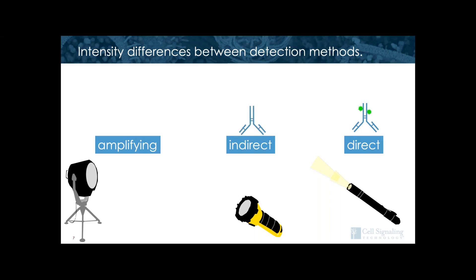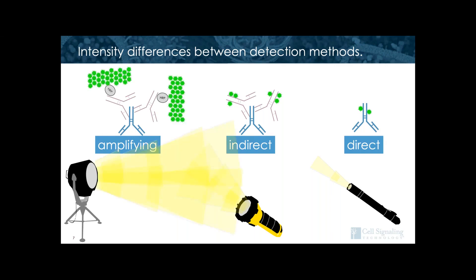The next type of detection method is indirect detection. The antibody that binds to your protein of interest is unlabeled, and a second antibody conjugated to fluorophores is required to detect the primary antibody. Because multiple secondary antibodies can bind to each primary antibody, there are more fluorophores to excite with this type of detection. This also allows for more flexibility when designing your multiplex panels, as long as you have antibodies from a suitable number of hosts. For cases where even more fluorophores are necessary, it is possible to use an amplifying method of detection, where the secondary is conjugated to something like an oligo or horseradish peroxidase, and additional fluorophores are deposited through a reaction.